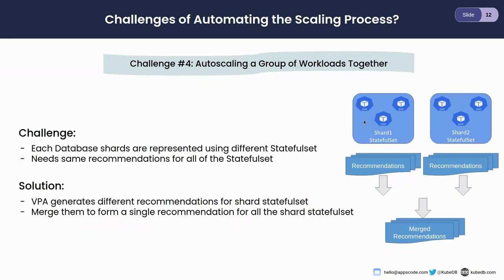The next challenge is to auto-scale a group of workloads together. Generally in sharded databases, each shard is represented by one StatefulSet, but all shards are treated similarly by the database operator and have the same resource requests. However, from the VPA recommender's perspective, each shard StatefulSet is different and may have different recommendations. We need a way to scale them all with the same recommendation — for example, by taking the maximum recommendation across shards and triggering vertical scaling with that value.